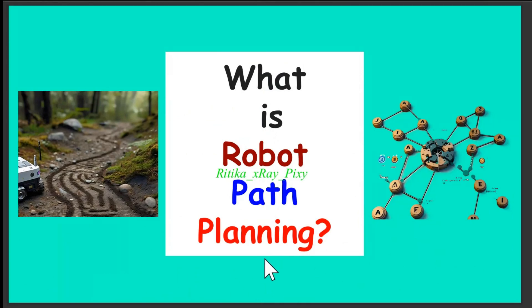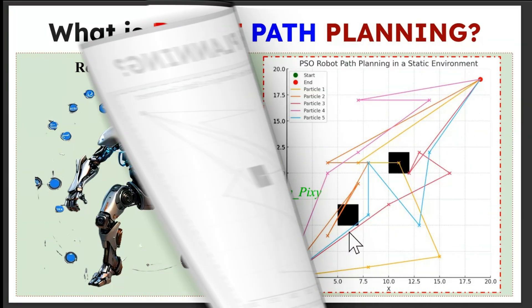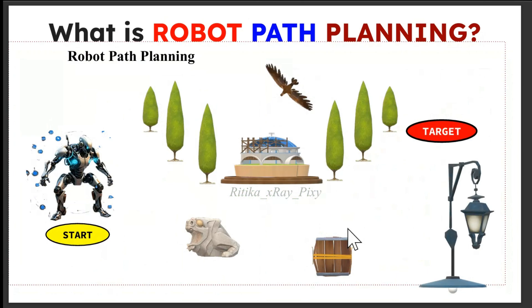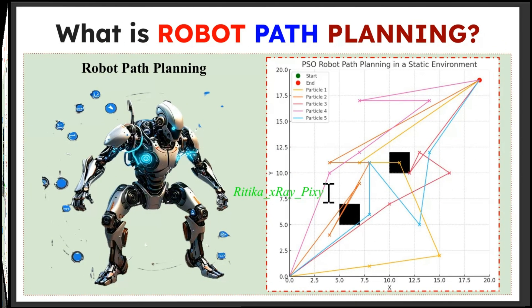First, let's start with what is robot path planning. In simple words, robot path planning is a process of finding the best path for a robot to move from its starting point to a target destination while avoiding obstacles. The goal is to find an optimal path that minimizes travel time and energy consumption while also ensuring robot safety.